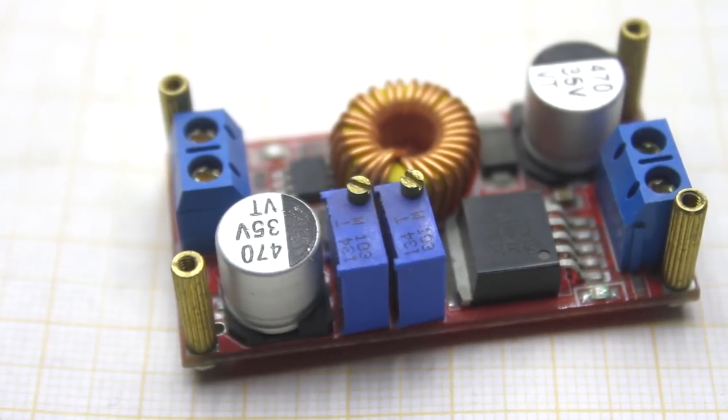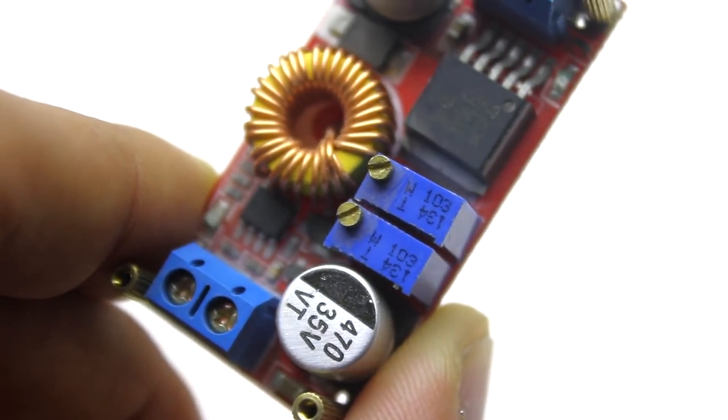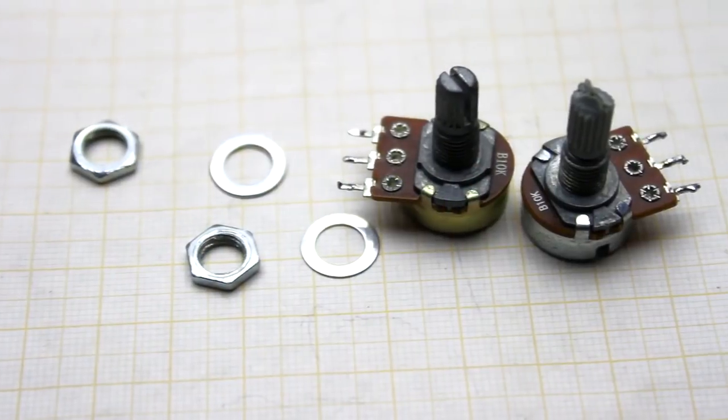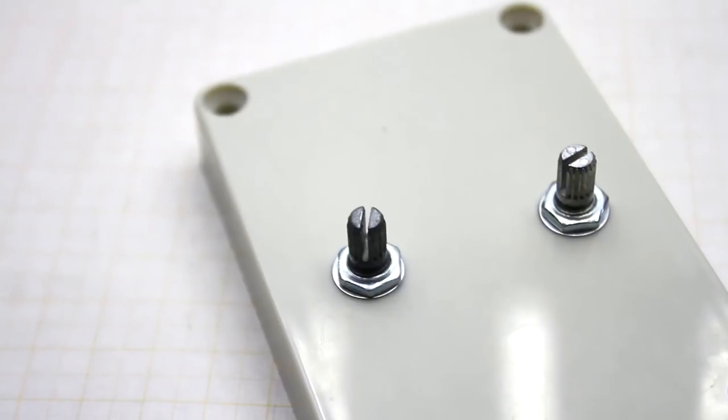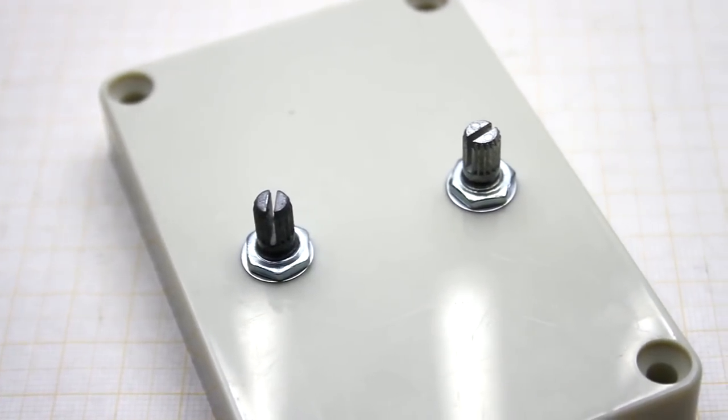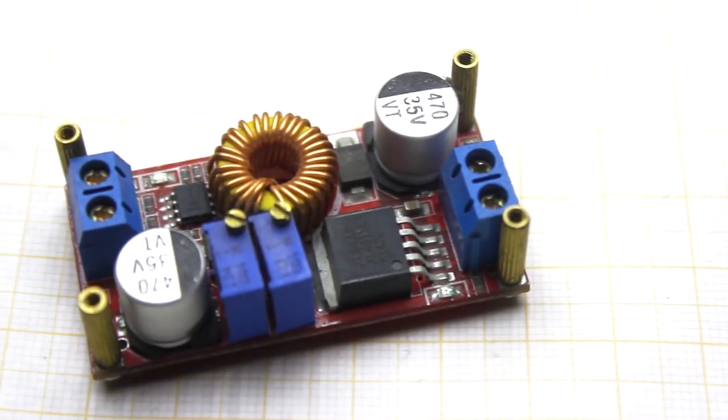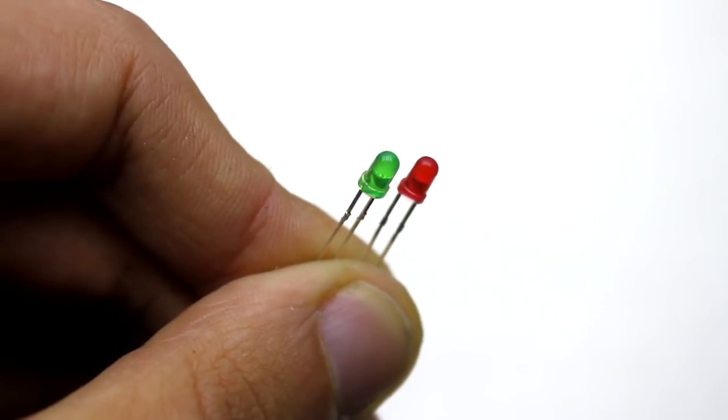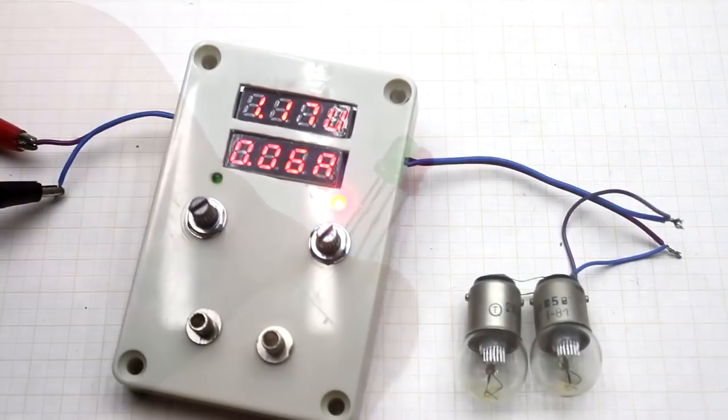On the stabilizer board, we have two tuning resistors. They are responsible for current and voltage regulation. I replaced them with variables and set them to the front panel of the power supply. There are also LEDs. They show the mode of the stabilizer. They are also replaced and set at the front panel.